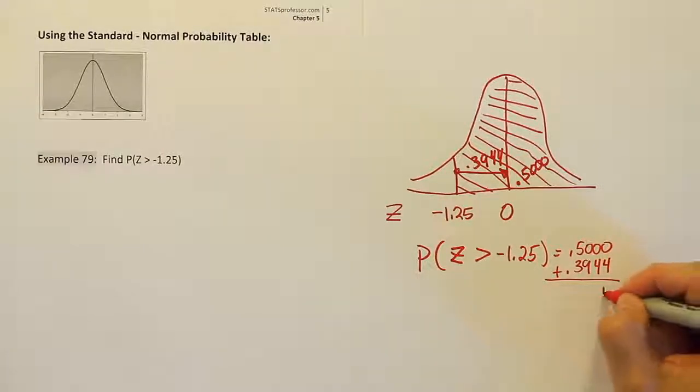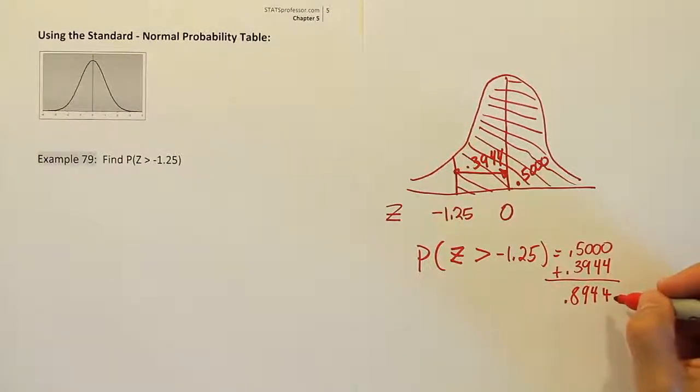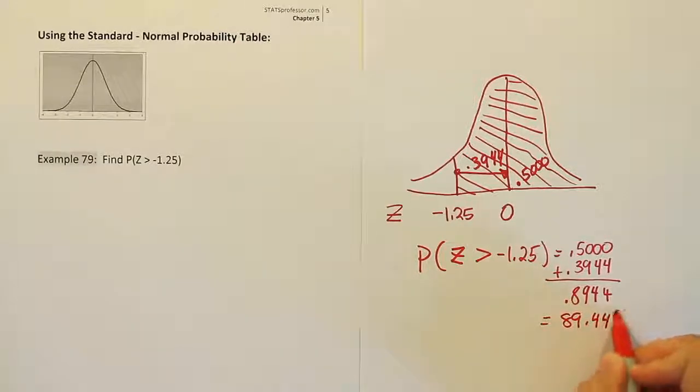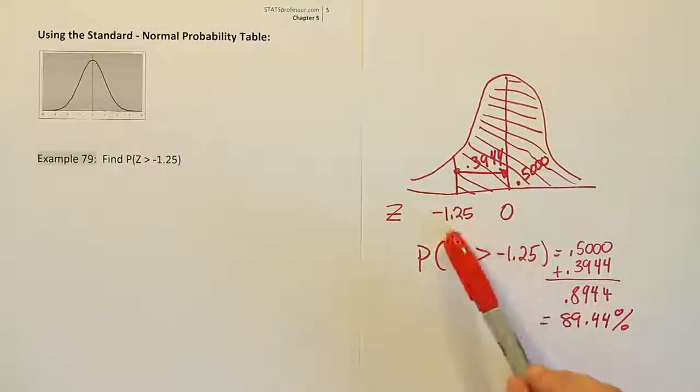If we do that we get 0.8944 or in other words 89.44%. So 89.44% and that is the probability that you are greater than negative 1.25 on the standard normal curve.